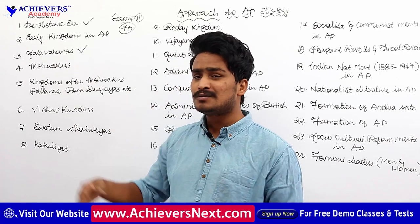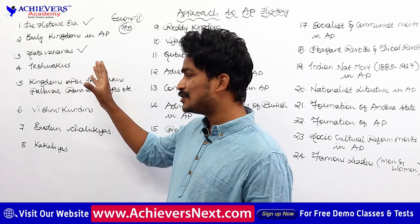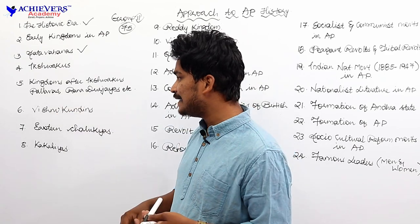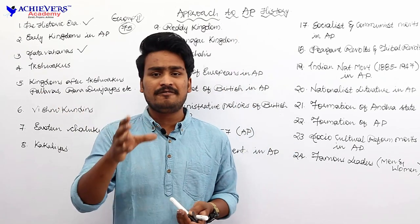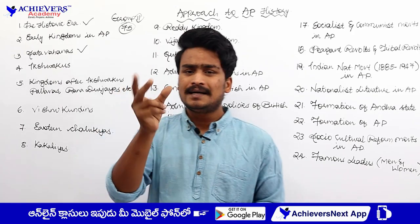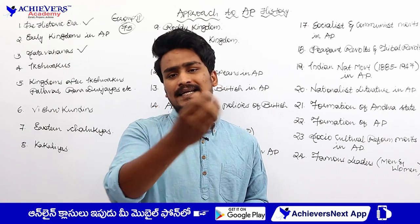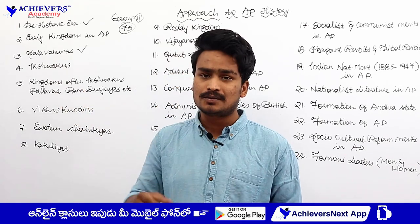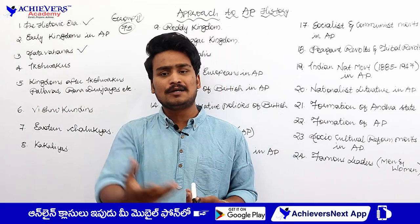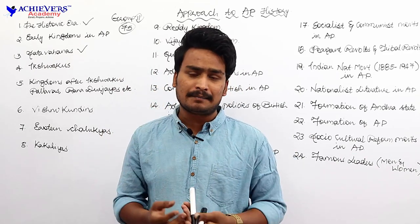We already know that Ikshvakus claimed themselves as the descendants of Lord Rama. After the fall of Ikshvakus, the fifth chapter we would be dealing is the kingdoms of Pallavas, Ranadurjayas, and Anandagotrikas. After Ikshvakus, a big empire was not created, but there were smaller kingdoms — Pallavas, Ranadurjayas, Anandagotrikas — many small empires that formed in Andhra Pradesh.